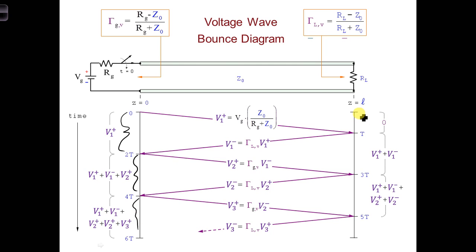Same thing we could do here at the load. We would get 0 until capital T. After that, we would see V1+ and V1- until 3T.